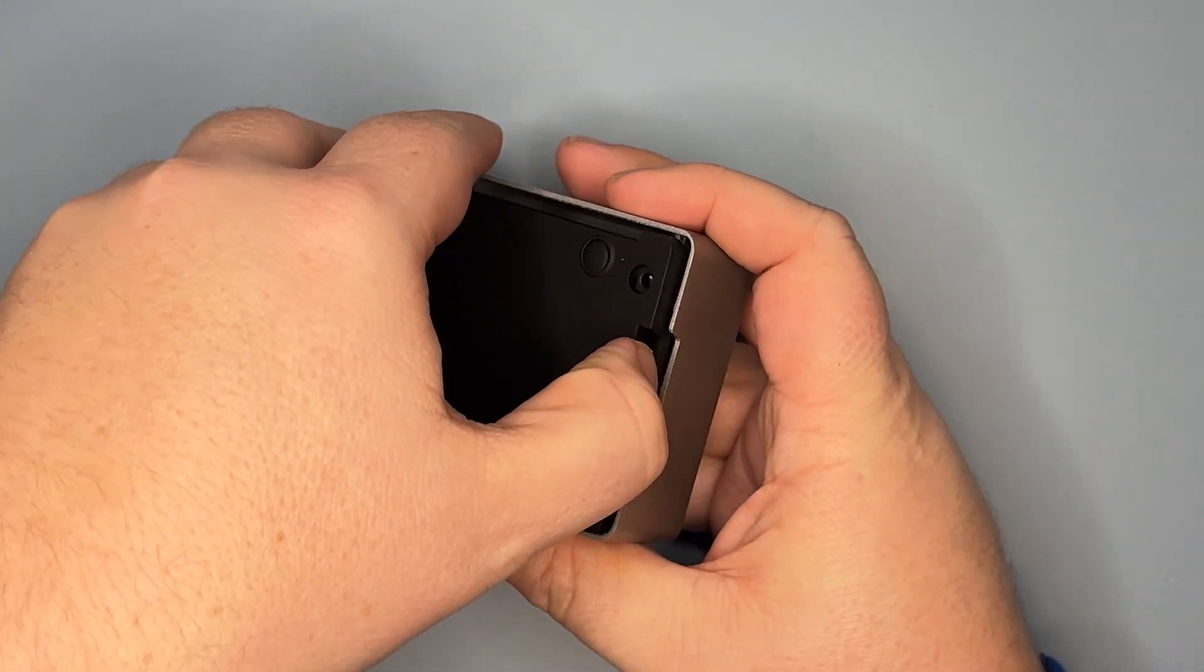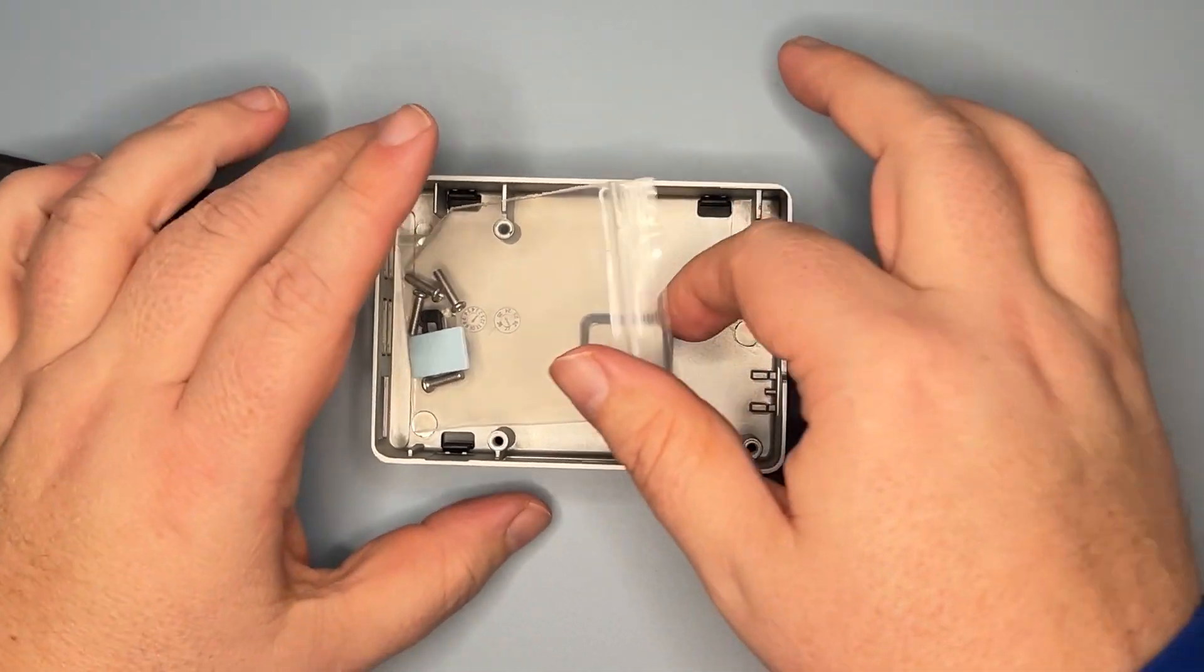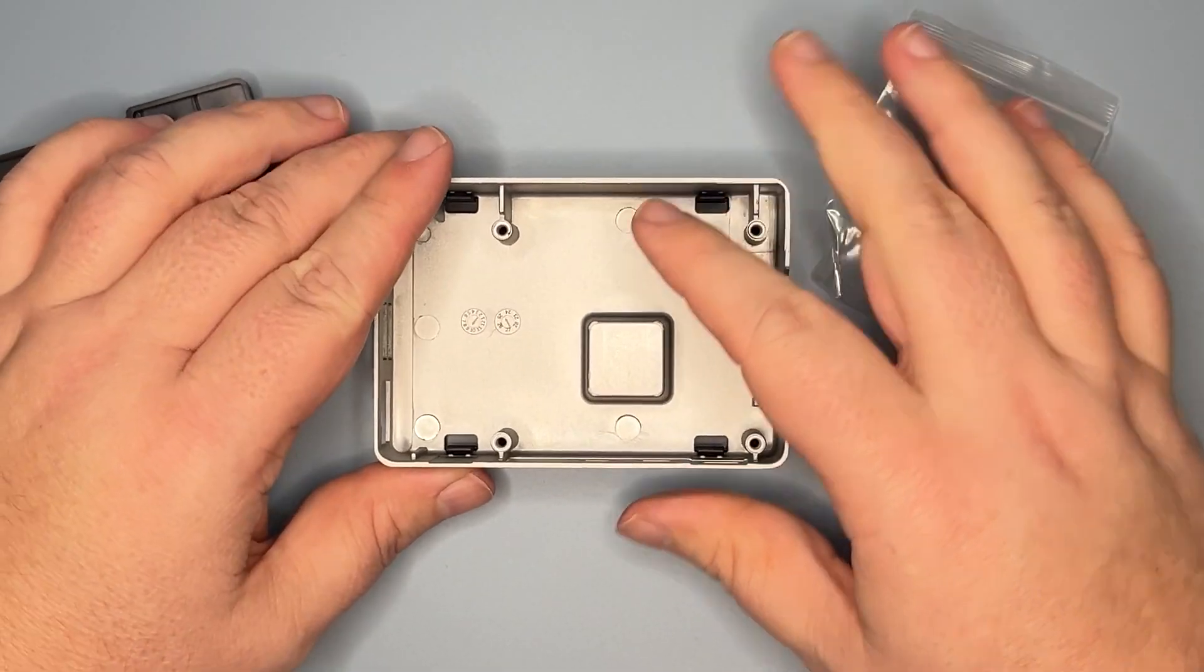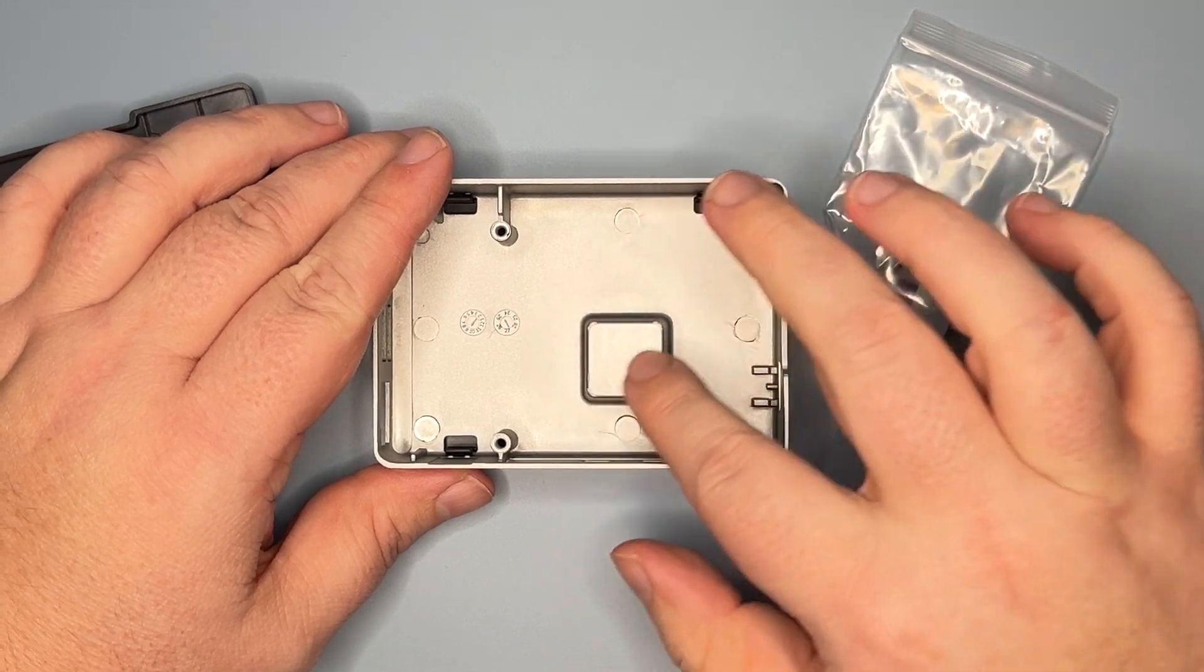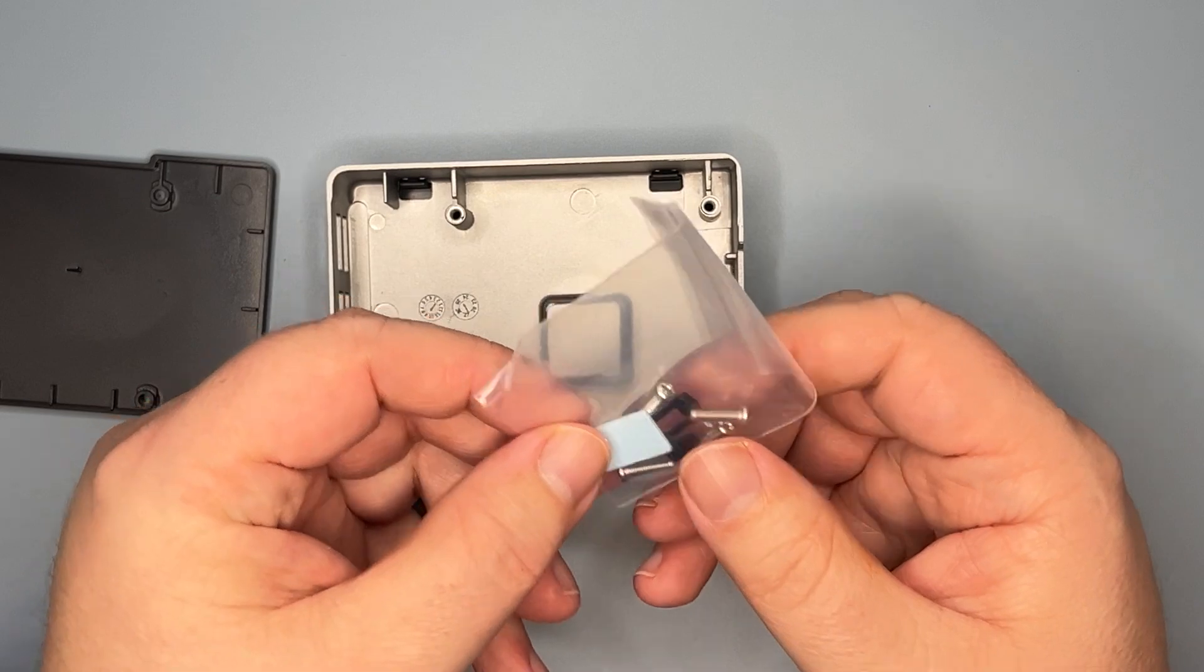So, let's open it up. And, as always, it comes with the bottom, the case itself, which acts as the heatsink, and the connector for the heatsink. And then some screws and a heatsink pad.